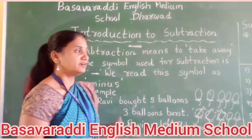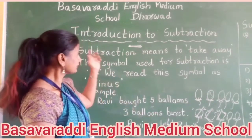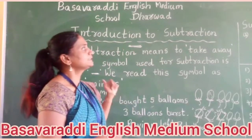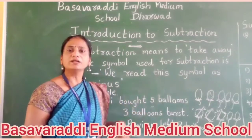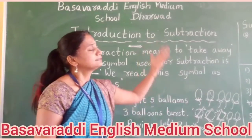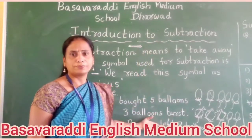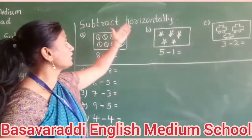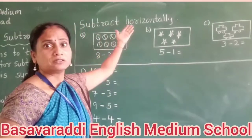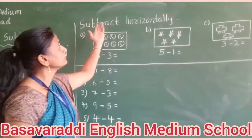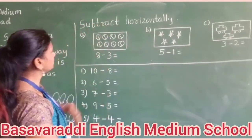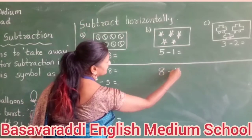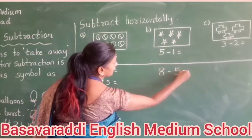Take away — difference. This is subtraction. Now we will go on expressions for some examples. Now, subtractions horizontally. We are going on the sums horizontally. What is horizontal? See, the sum like this — this is the horizontal.